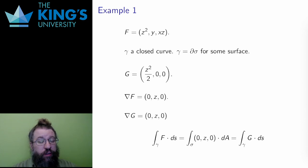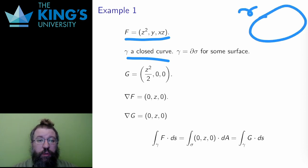So consider this field and gamma being any closed curve. A closed curve is the boundary of some surface, so I can use Stokes to change this into a flux integral over the surface of the curl of the field. Well the curl of this field is zero.